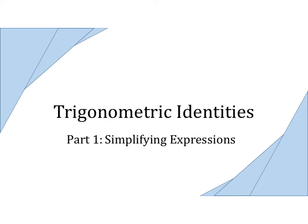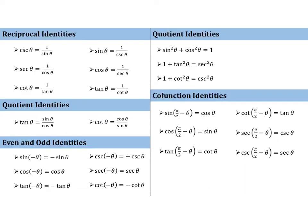Let's dive deeper into our use of algebra and trigonometry and look at strengthening our understanding of trigonometric identities. These are the trigonometric identities that we have seen and should know. If you do not have these memorized, you must. Not only should you have them memorized, but you should be able to manipulate them mentally and therefore recognize things like 1 minus sine squared of theta is equal to cosine squared of theta, or cosecant squared of theta minus 1 is cotangent squared of theta.